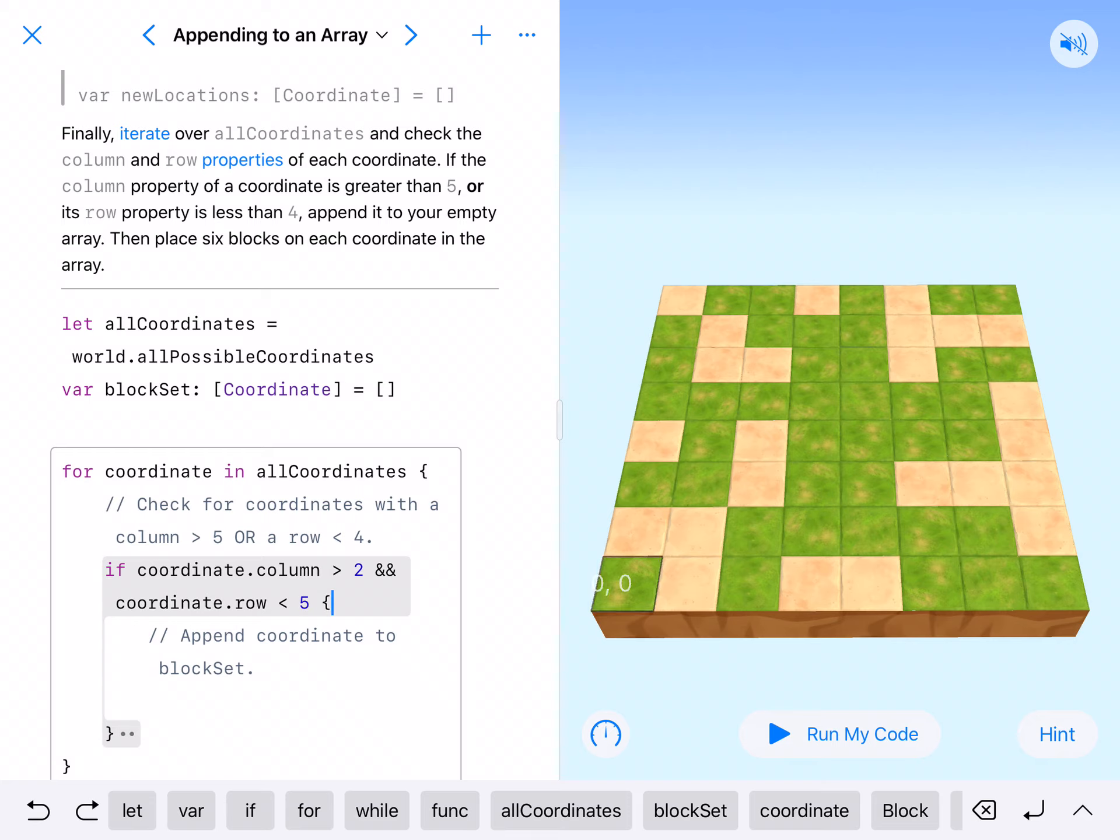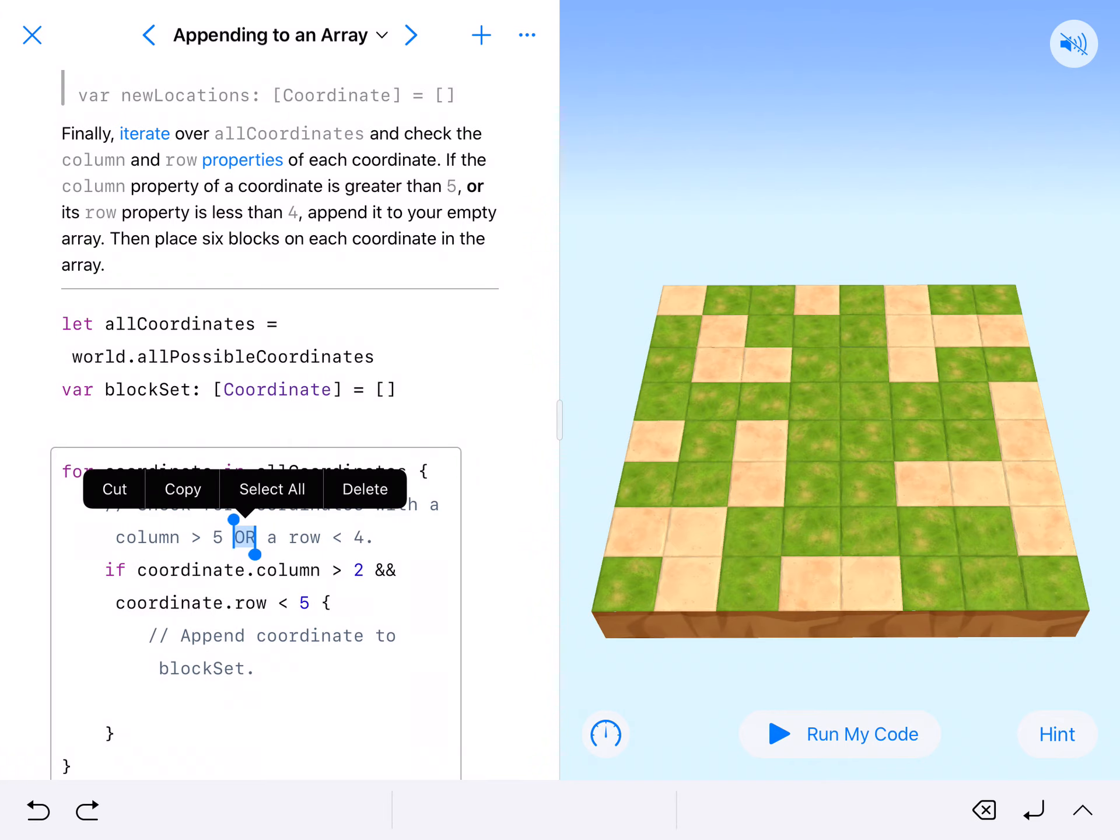So greater than five, so not zero, not one, not two, not three, not four, not five. So six and seven. And then, or row less than four. So zero, one, two, three, four. Okay.